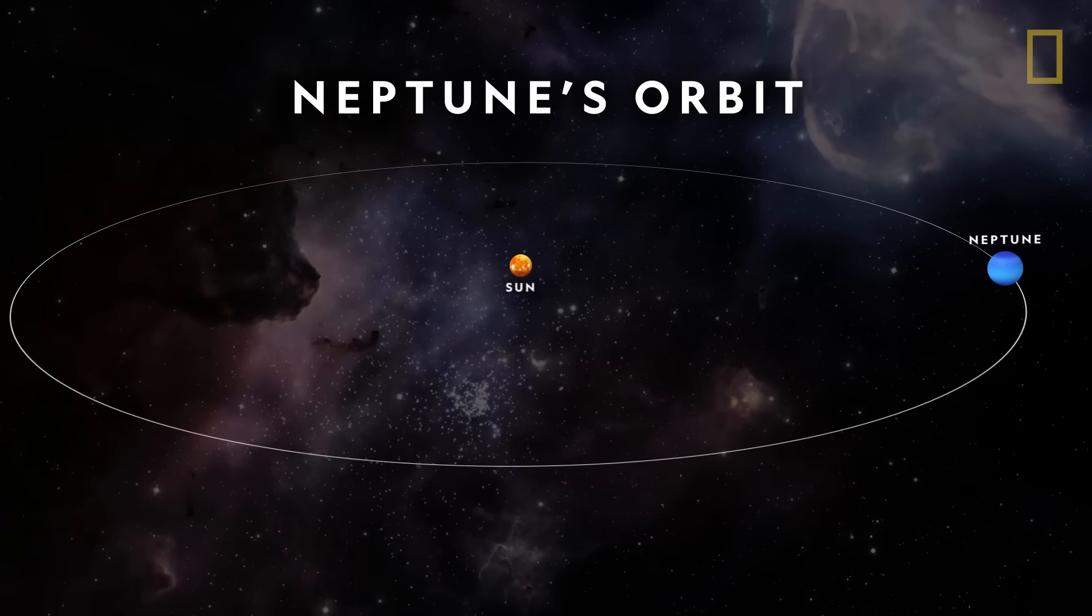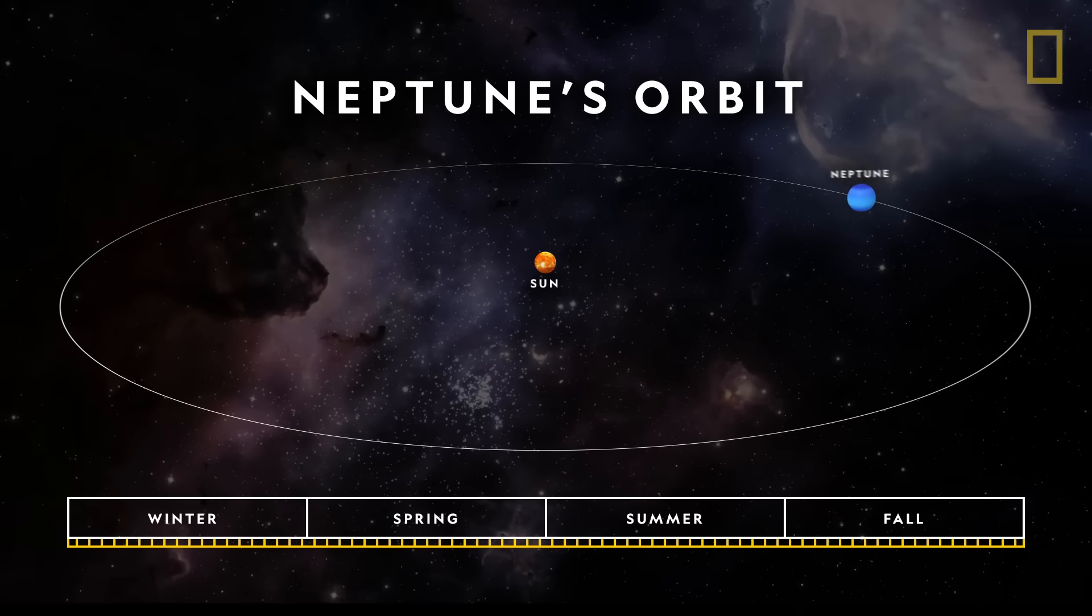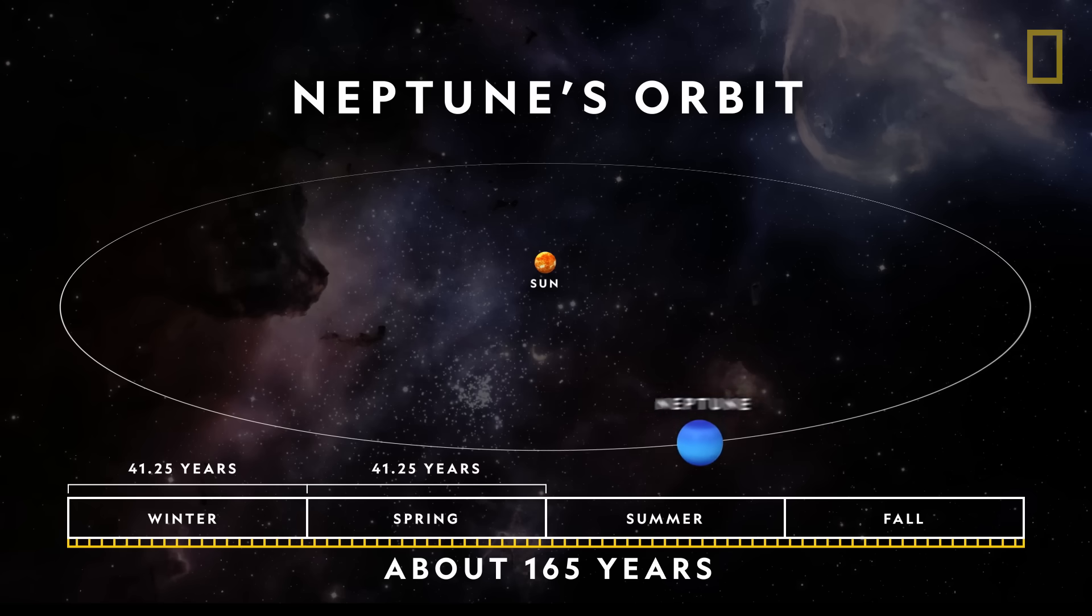This distance creates the longest orbit of the eight worlds, about 165 years, with the seasons lasting a little over 40 Earth years each.